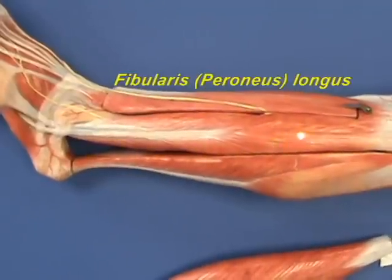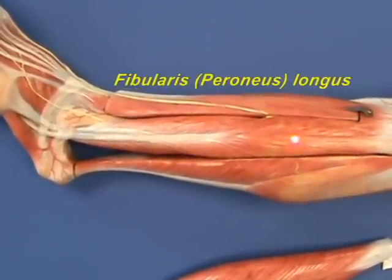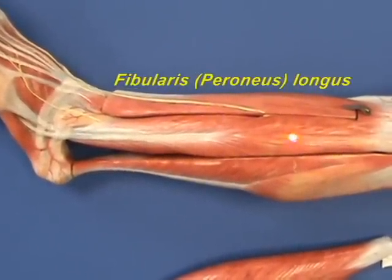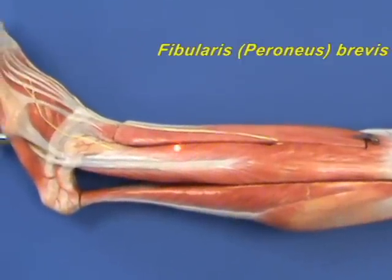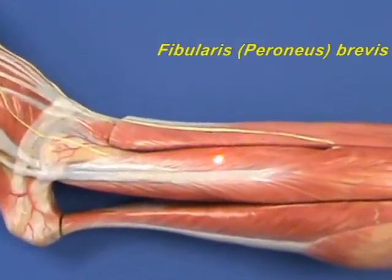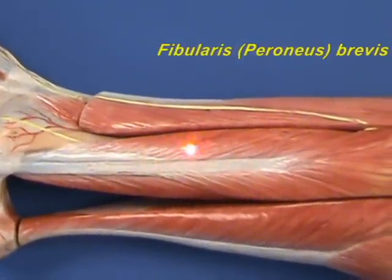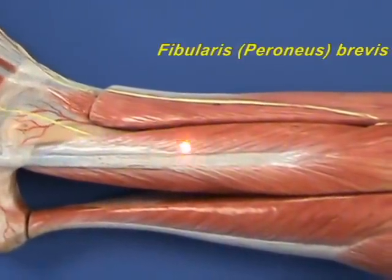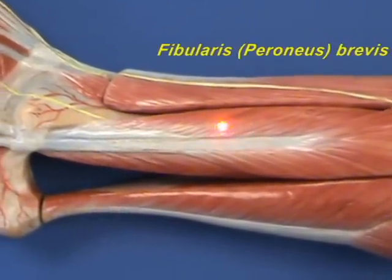The fibularis longus everts and plantar flexes the foot at the ankle joint. The fibularis brevis, which we can zoom in on over here, has an origin on the lateral lower two-thirds of the fibula.